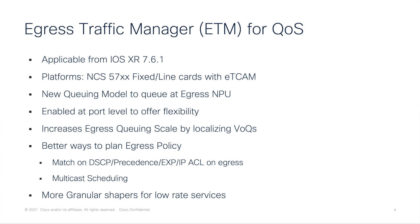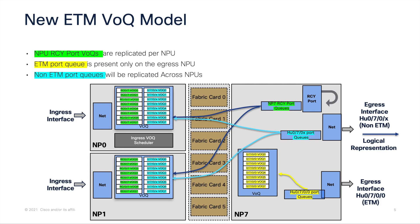ETM is a new queuing model where we do the queuing at the egress NPU itself. This function is enabled at the port level to offer flexibility, so we can choose which ports use the new queuing architecture and which ports stick to the previous queuing architecture — both can coexist. We get a significant increase in queuing scalability through VoQ localization. This feature also allows classification based on packet header information like DSCP, IP precedence, MPLS EXP, etc., and it allows scheduling of multicast traffic for egress. Along with ETM, we get more granular shaping for low-rate services.